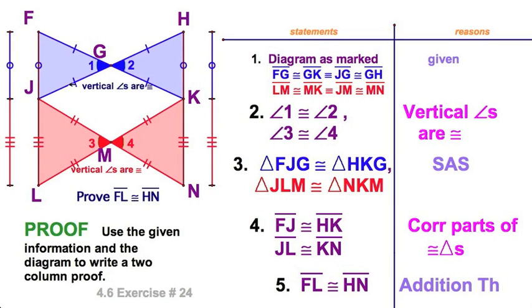And then finally, since my objective was to say FL is congruent to HN, I'm just going to add them up. Now the addition theorem we had back in Chapter 2, if congruent segments are added to congruent segments, their sums are congruent. So one blue, one red, equals one blue, plus one red. And we're done.